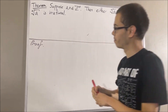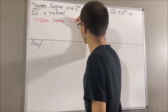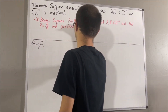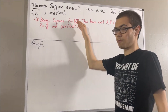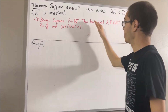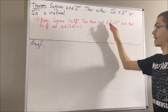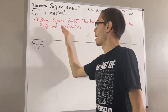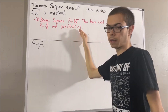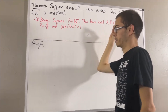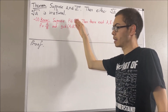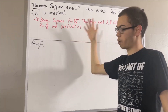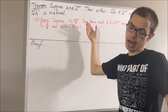Here's the first one. Suppose p is a positive rational number. Then there exist positive integers a and b such that p is equal to a over b, and the greatest common divisor of a and b is equal to 1. So what this is essentially saying is that every positive rational number has a simplest form. For example, 4/8 can be simplified down to 1/2.